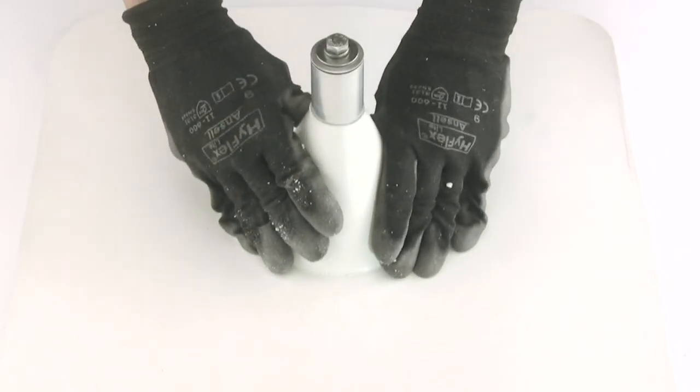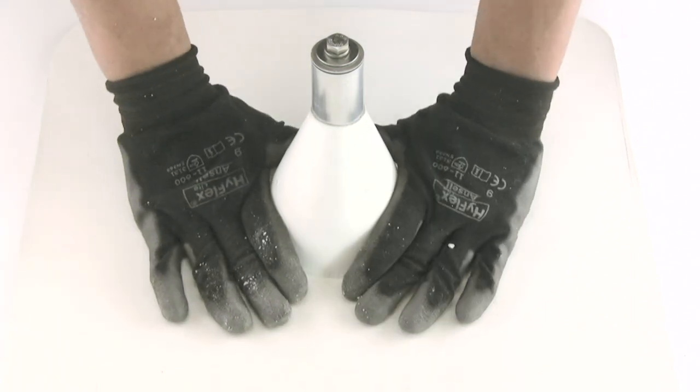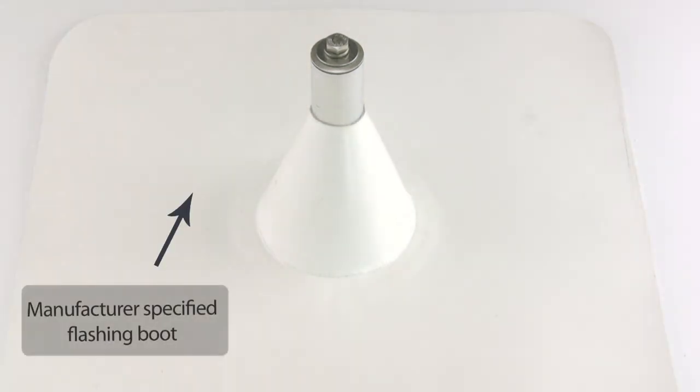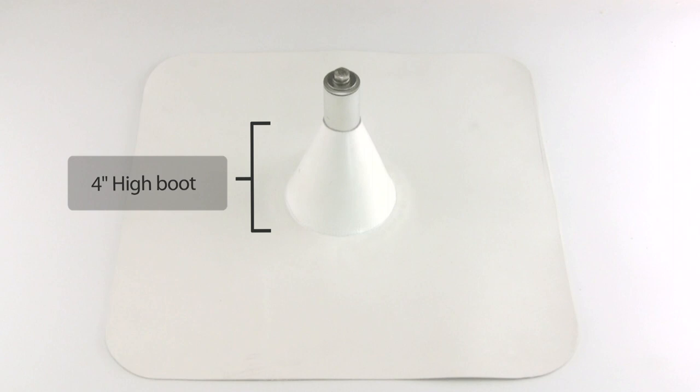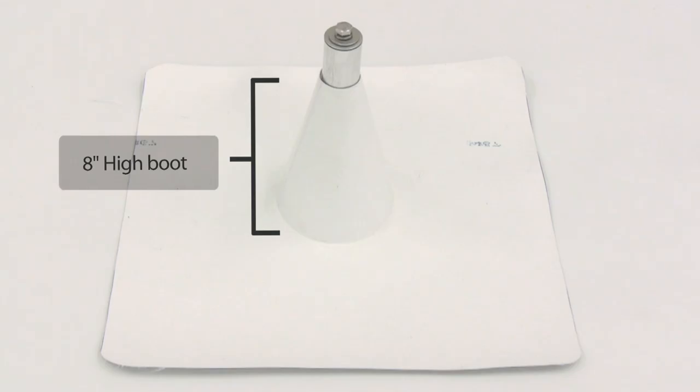You are now ready to flash the mount and the roof around it. It's essential to use the flashing material specified by the roofing manufacturer. On the higher parts of the roof, you can use a 4-inch boot, but for mounts placed in the drip line or flood zone on the outer edges of the roof, the NRCA recommends using an 8-inch boot.